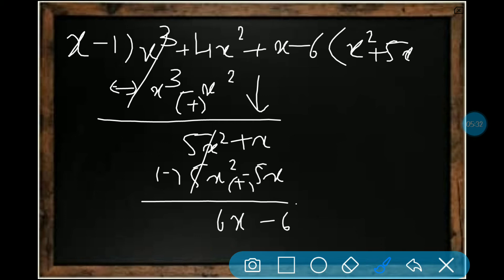Minus 6 will come down. Now 6x by x, what is it? 6. So we will add 6 here, plus 6, and we will divide 6x minus 6. Now everything will become 0 because here minus and here it becomes plus, so minus 6 plus 6 will become 0. Take a screenshot. Here 0 is there, this will be minus. 0 is the remainder.